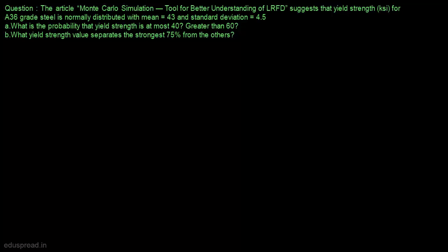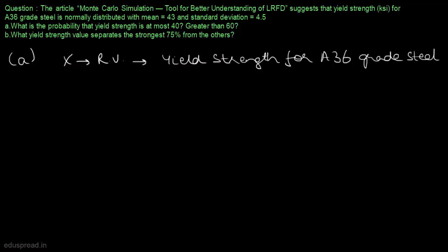In part A, we have to find the probability that yield strength is at most 40, and then we have to find the probability that it is greater than 60. Let's define a random variable x that denotes the yield strength for A36 grade steel. We are given that x is normally distributed with mean equal to 43 and standard deviation equal to 4.5.